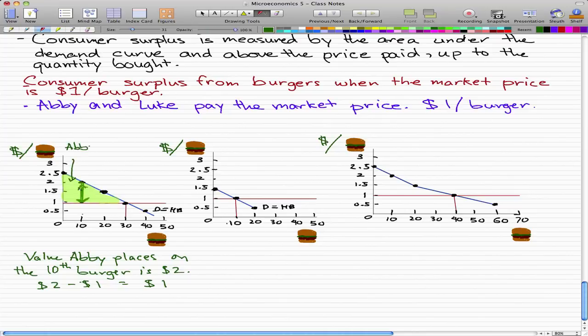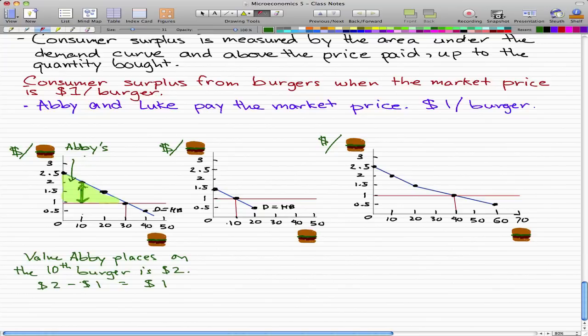This is Abby's consumer surplus, which I'll denote as CS. This green arrow is Abby's consumer surplus from the 10th burger.